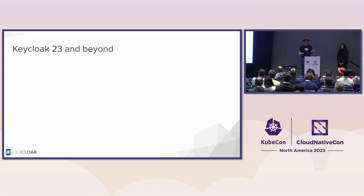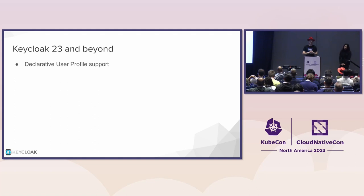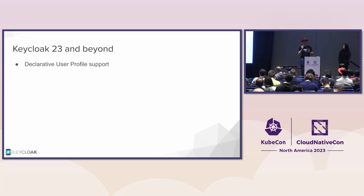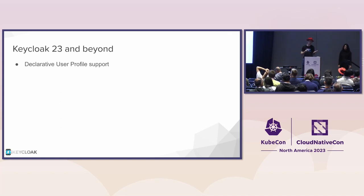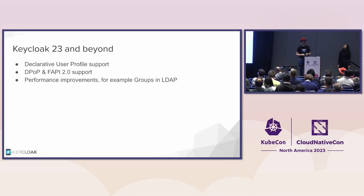What's upcoming for Keycloak 23 and beyond? Something that has been in the works for quite some time and was a preview feature is declarative user profile support. It has a somewhat unusual name, but it enables a lot of user self-management — it's all about who can change what, what questions you ask users when they self-register, what attributes you ask for, whether the user or admin is allowed to change or see them. That's a cornerstone for user self-management and admin management of users in Keycloak. We will hear more about DPoP and FAPI 2.0 in the next part of the talk.